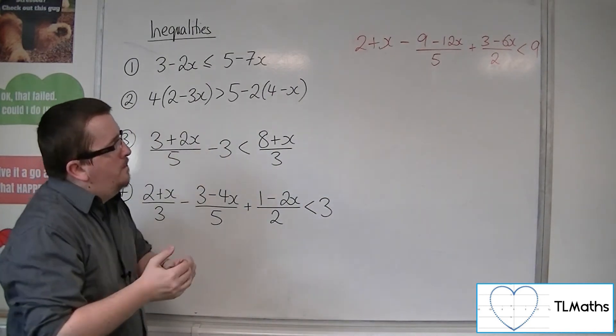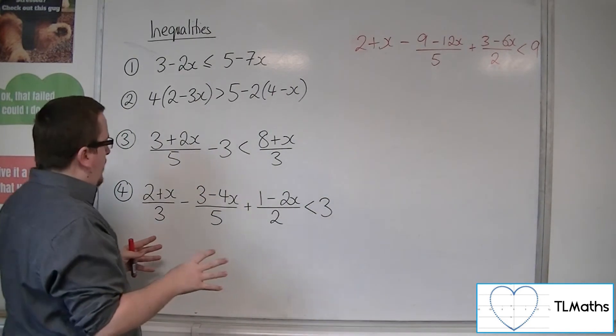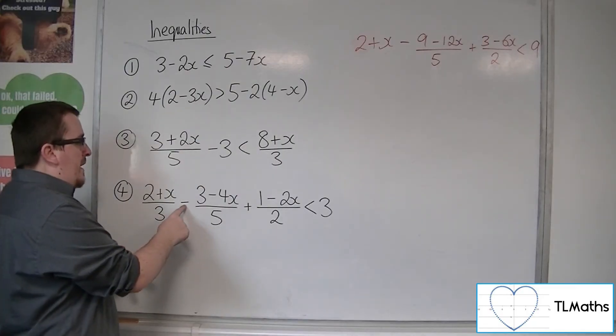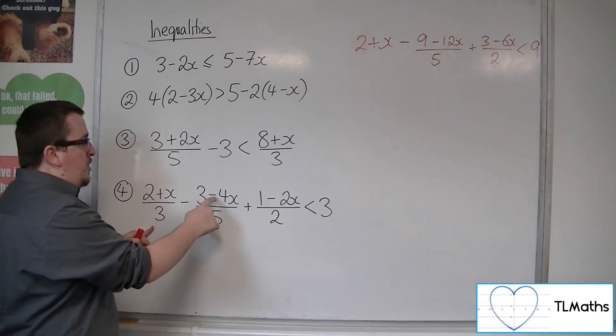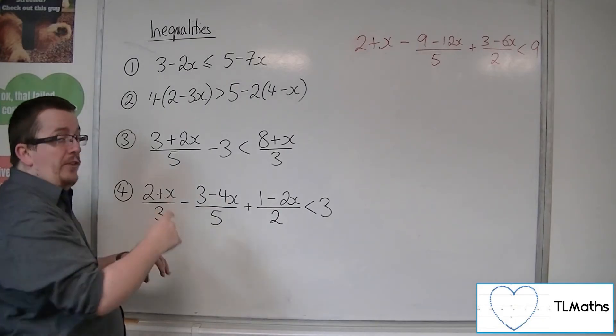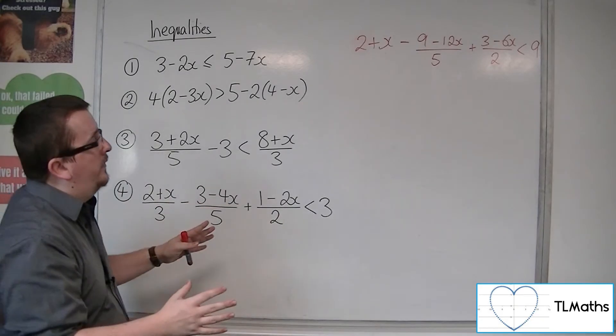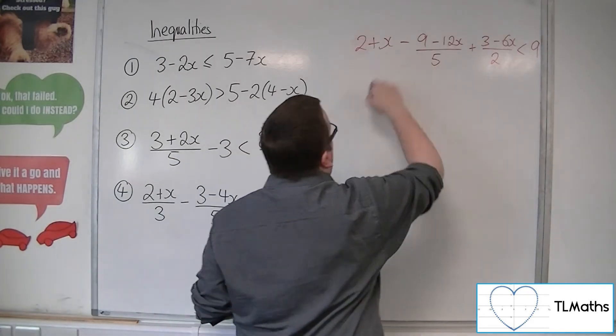Now, just to make sure that we're happy with that, because this minus sign here, remember I multiply everything through by 3, so it just affects the numerator, not the denominator. That minus sign stays where it is. So that minus sign is that one there.